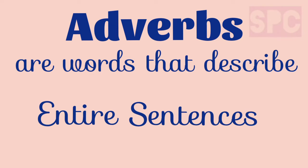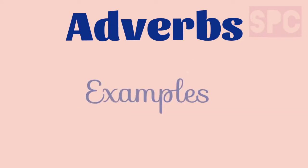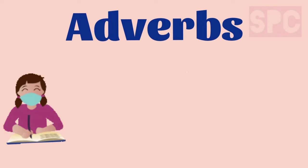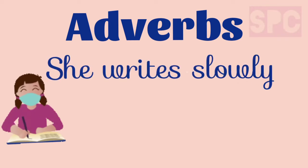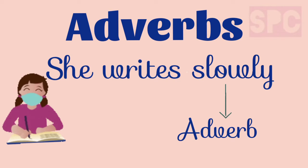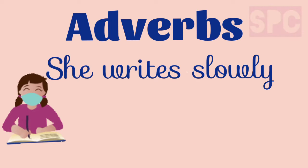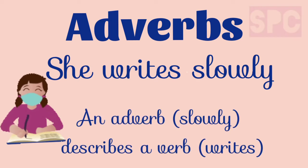Let's understand this with a few examples. First example: she writes slowly. In this sentence, the adverb 'slowly' describes how she writes. So, this sentence is an example where an adverb describes a verb.